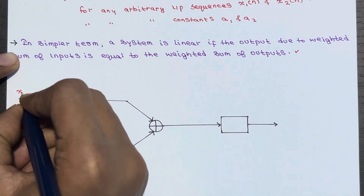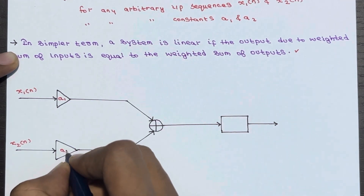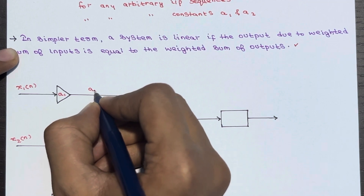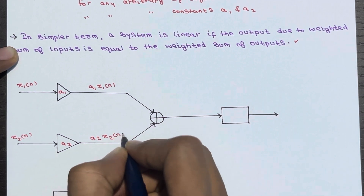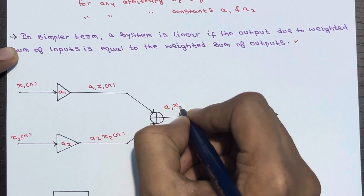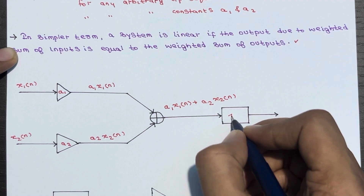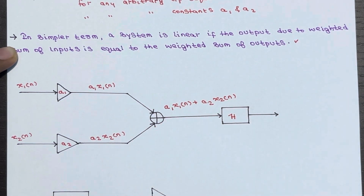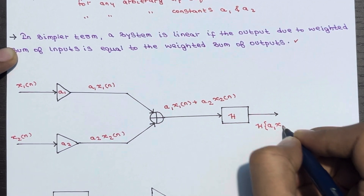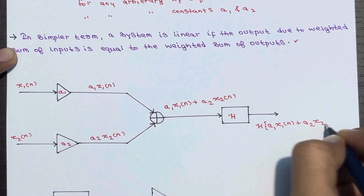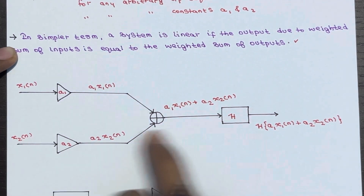In the first case, the inputs x1(n) and x2(n) pass through constant multipliers a1 and a2, giving a1·x1(n) and a2·x2(n). These are summed to give a1·x1(n) plus a2·x2(n), and this combined signal is applied to system H. The output is the transform of the complete expression: H[a1·x1(n) + a2·x2(n)].